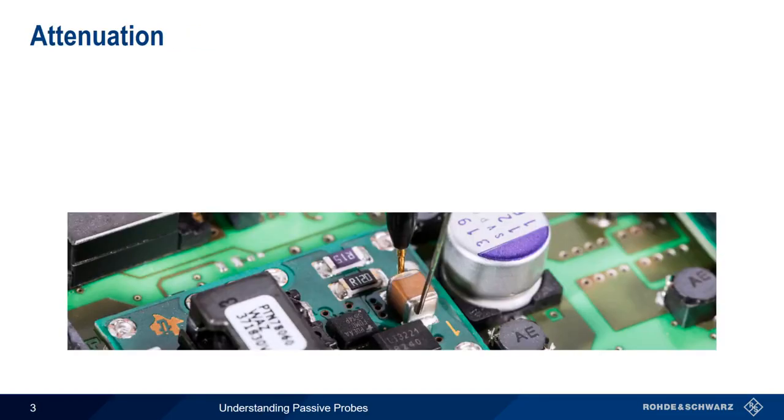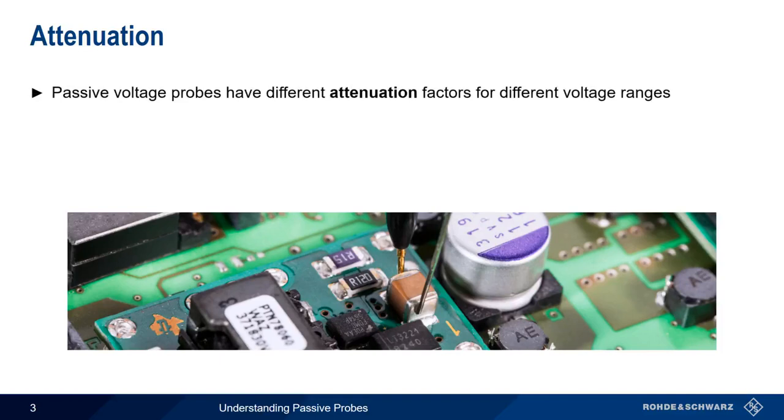The most important characteristic of passive probes is something called attenuation. In other words, how much does the probe attenuate the input signal? This attenuation factor is normally expressed with a number followed by the letter x, such as 1x, 10x, 100x, etc. You'll also sometimes hear people call these 1x, 10x, 100x, and you'll sometimes see them written as x1, x10, etc.